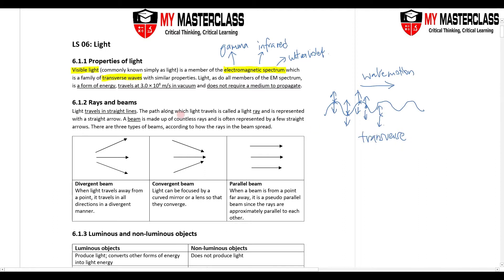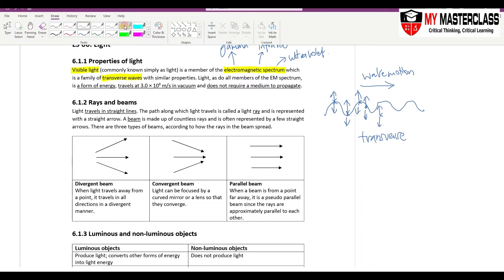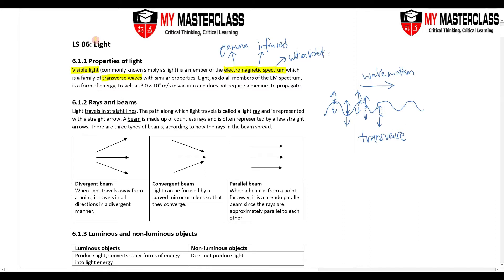Other than being a transverse wave, there are some properties of light that you need to know. Light travels at a very specific speed in vacuum: 3 times 10 to the power of 8 meters per second. On top of that, it does not require a medium — meaning that light can move through a vacuum.